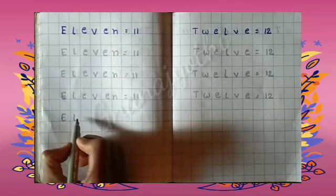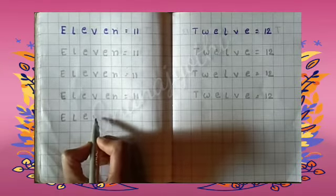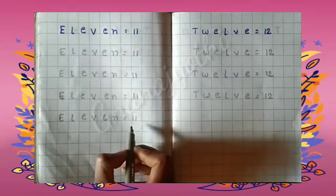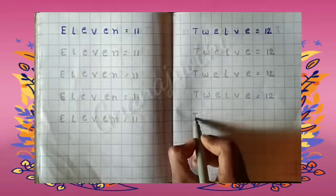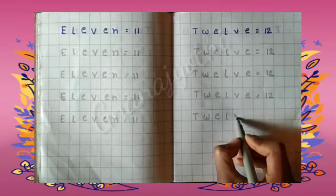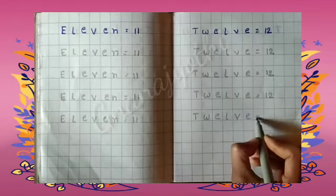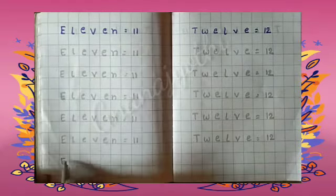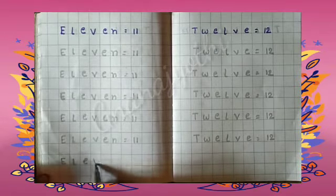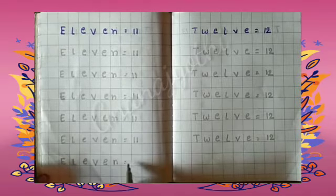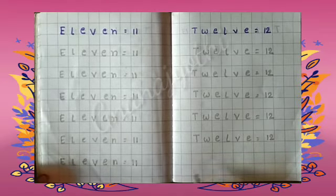Once again say E L E V E N, 11. T W E L V E is equals to 12. E L E V E N is equals to 11.